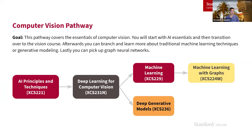Next, we have the computer vision pathway, focused on vision-based applications. Again, we recommend starting with XCS 221, but if you already have the AI background, you can jump directly into XCS 231N, Deep Learning for Computer Vision. From there, you can branch into the generative models course or the machine learning course — we recommend generative models after vision because of applications like diffusion models to generate images from text. Additionally, machine learning with graphs would complement the vision algorithms discussed in XCS 231N.